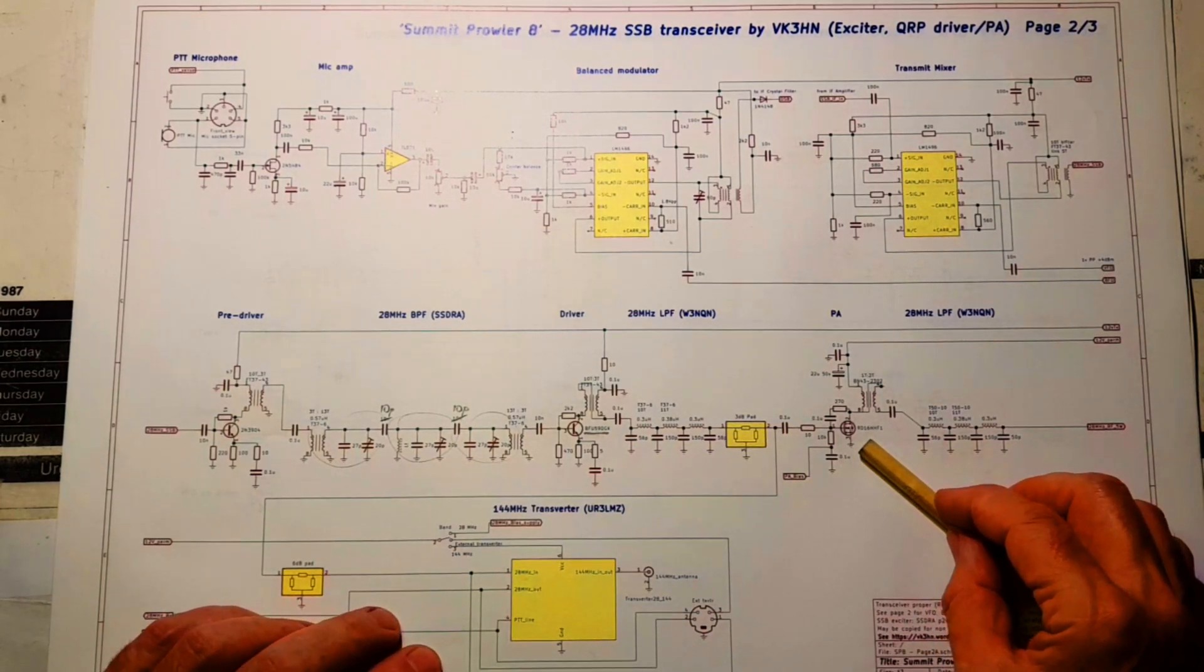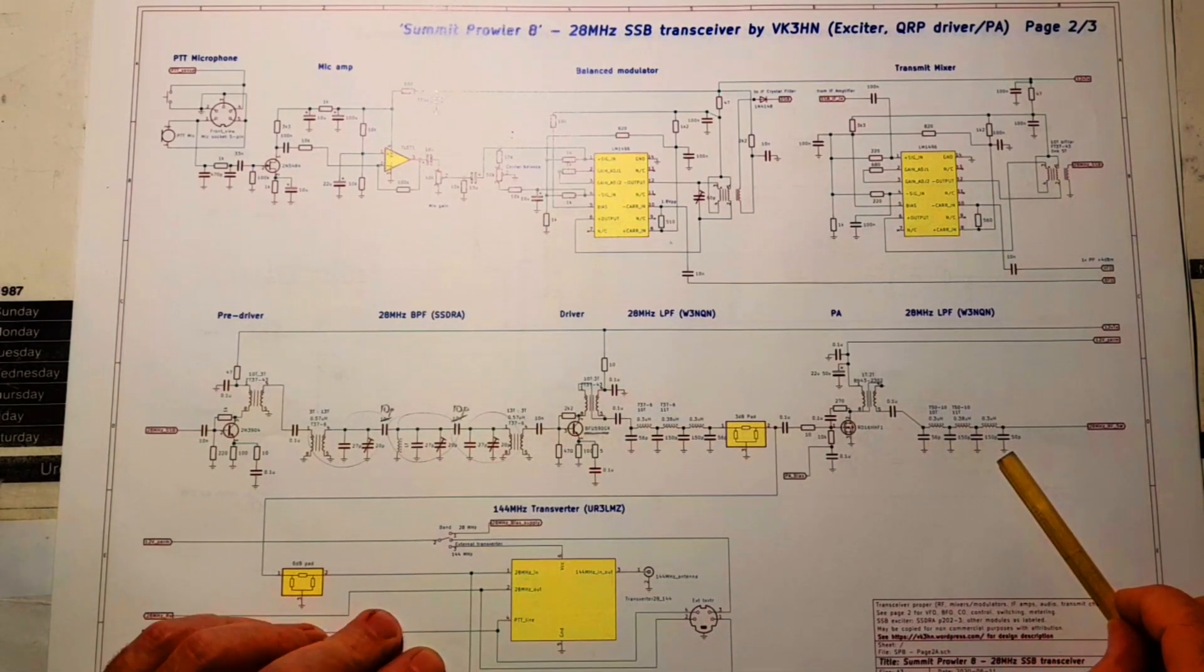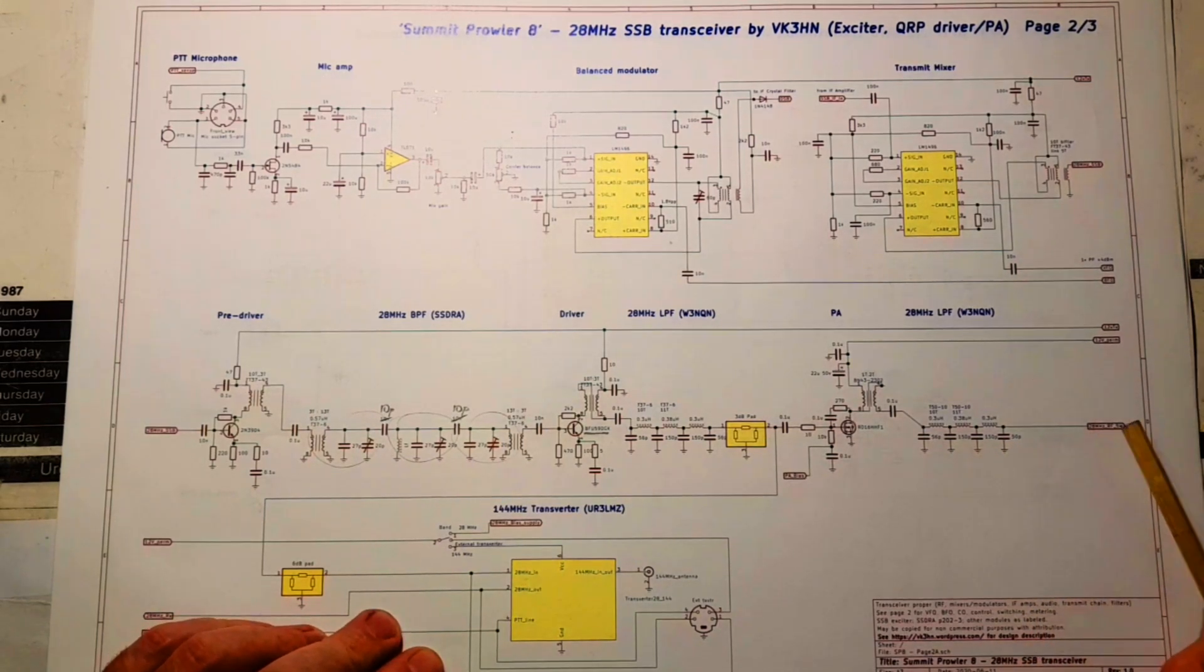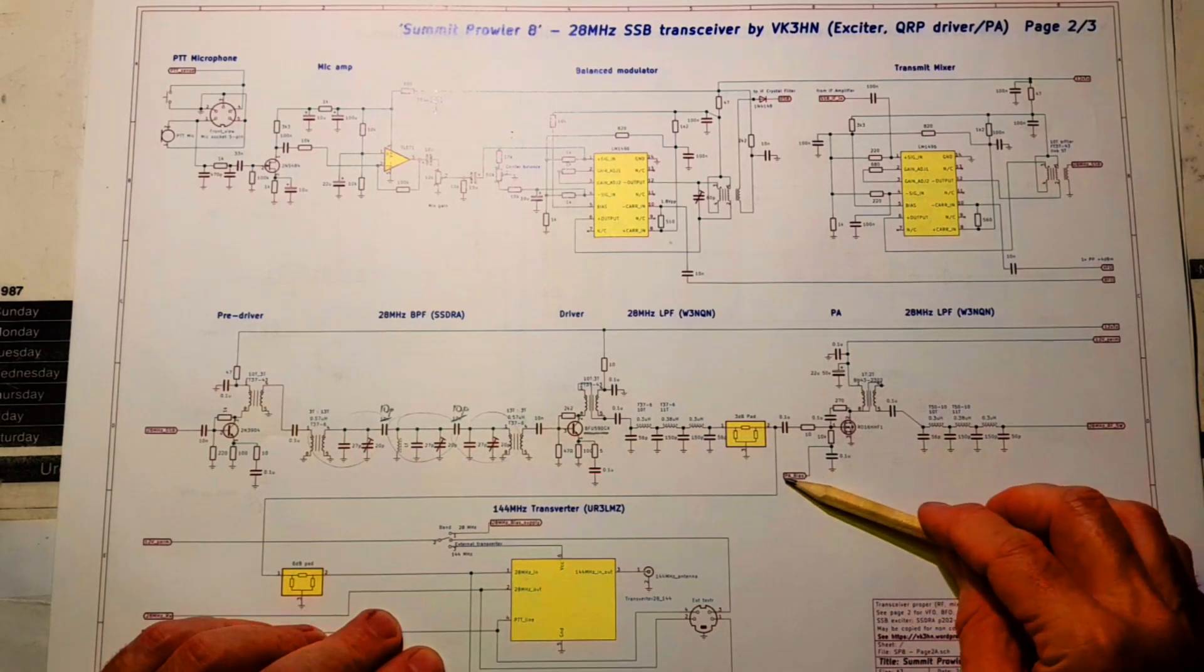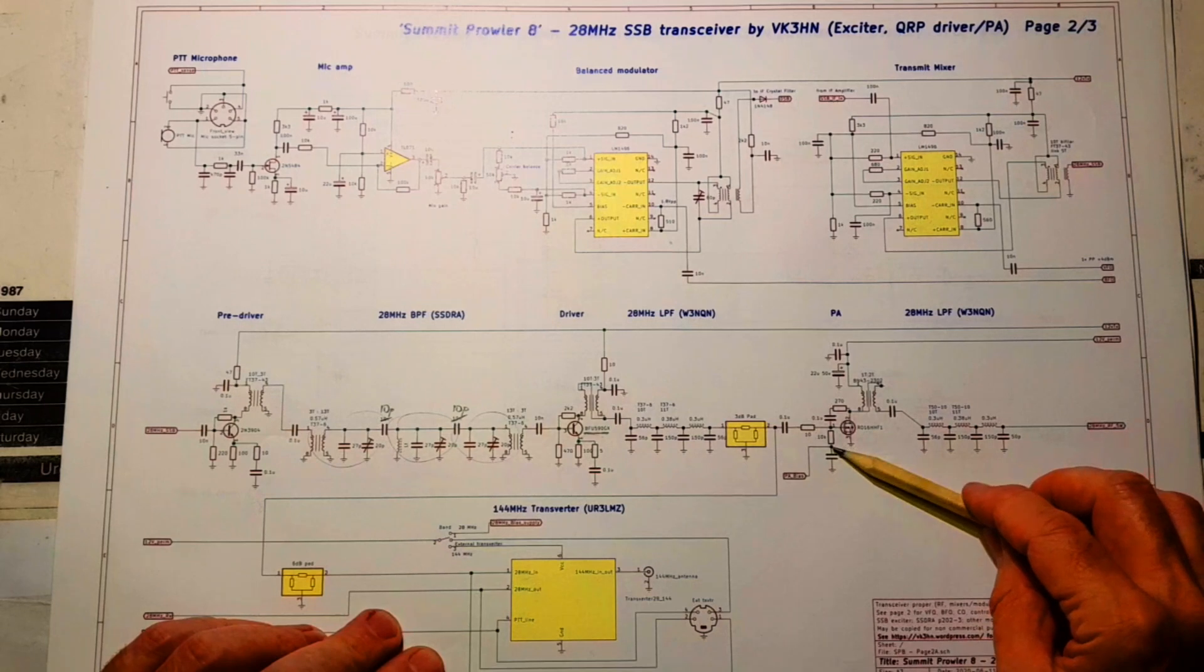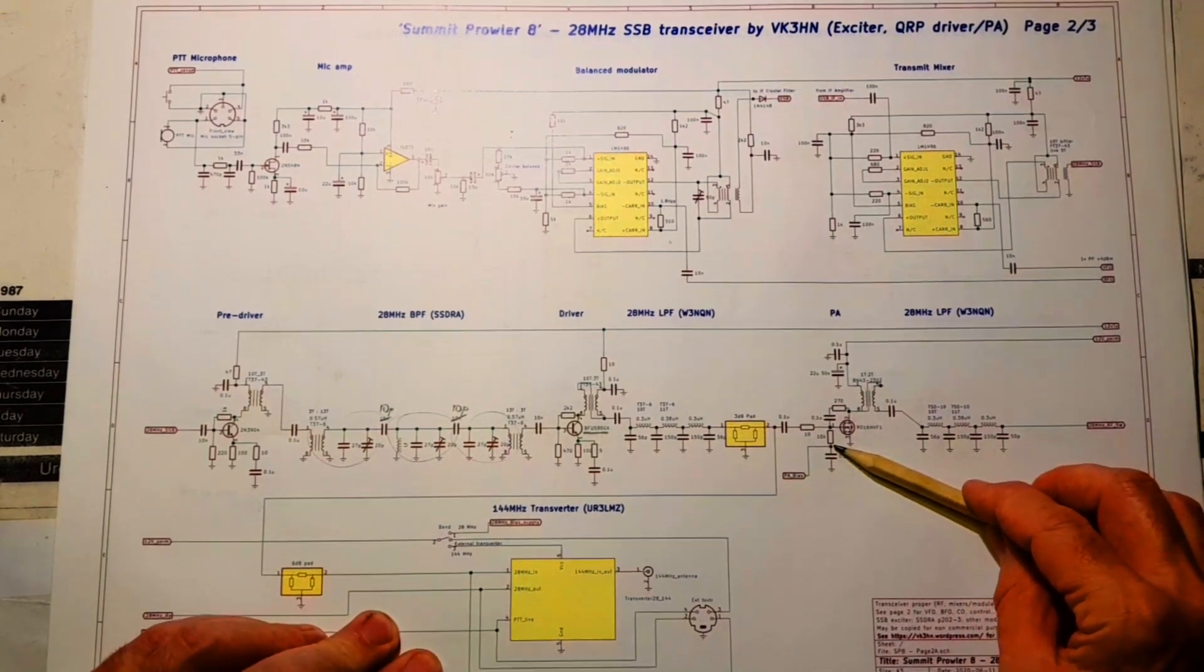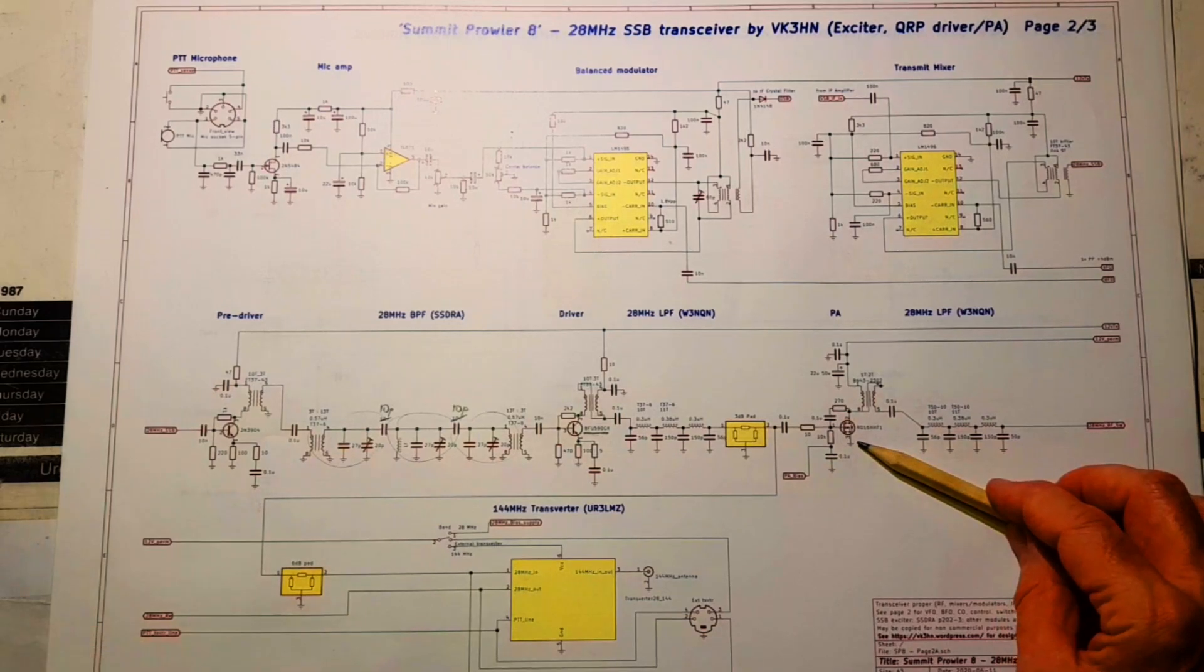That's the Mitsubishi RF power transistor. Then through a pretty conventional, probably it's a W3NQN, I suspect, low-pass filter, and then out to the transmit relay. And the PA bias for this stage comes in from, it's controlled by the Arduino, and that allows you to sequence the PA bias in the correct sequence when you go from receive to transmit and back again.